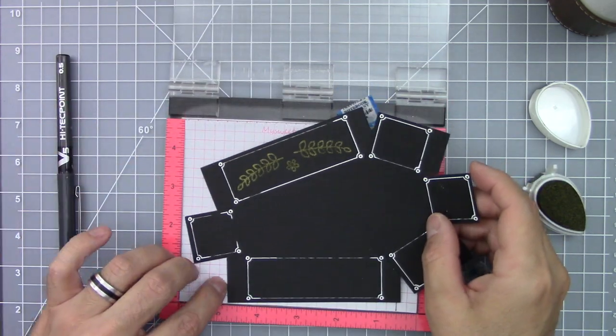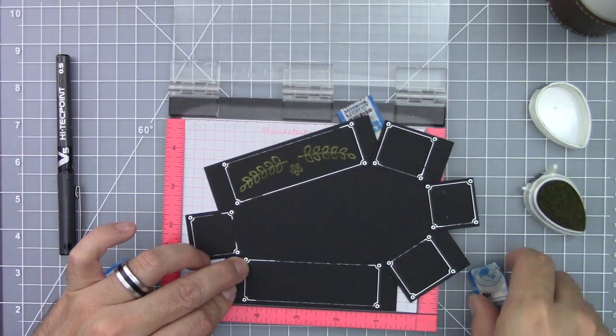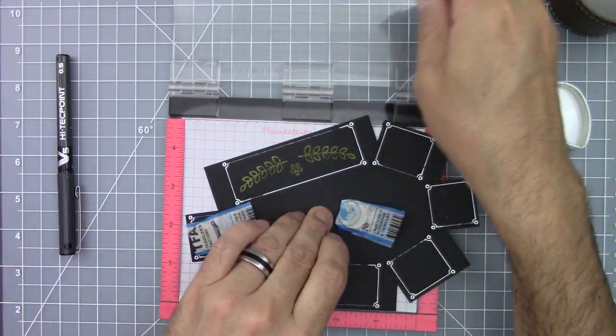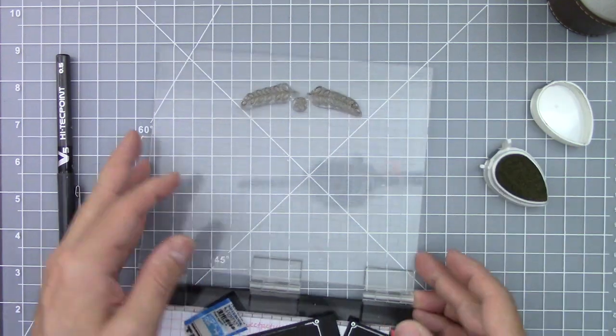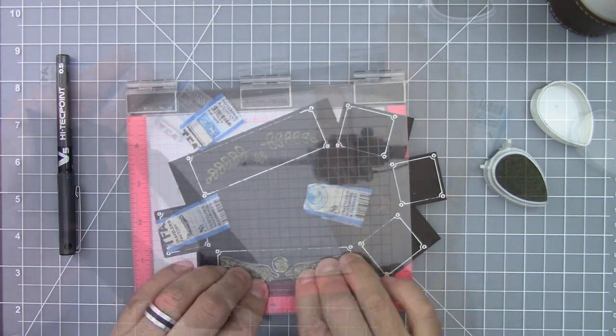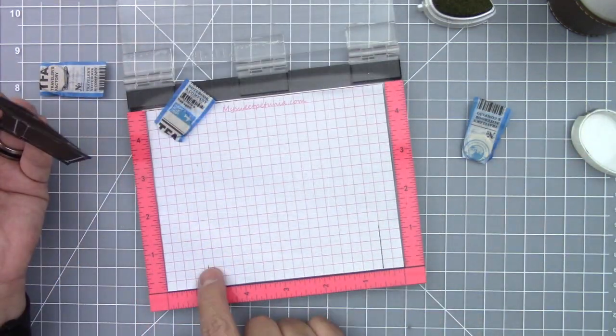Once you've stamped one side, turn it around and follow the guides that you drew on the paper grid. Put on your magnets, ink up your stamp and stamp the other side of the coffin.